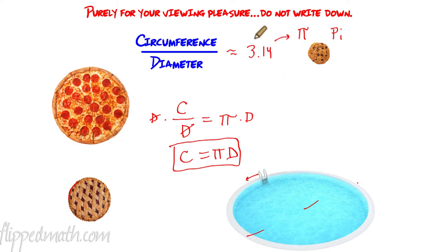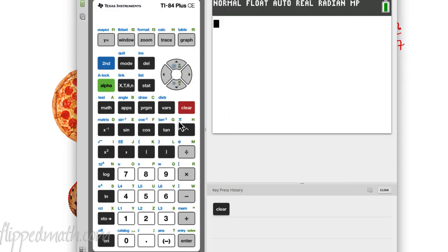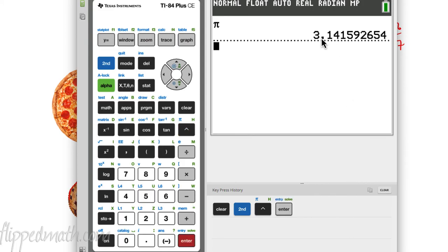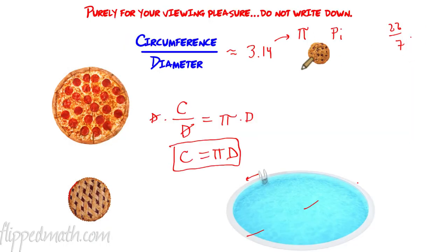We're going to use 3.14 for pi. Sometimes people use 22 over 7, or if you want to be really accurate, 3.14159. Your calculators actually have a pi button — if you hit second and then that button and hit enter, you get 3.141592654. We use those wavy lines which means approximately equal to, so pi is approximately equal to 3.14.